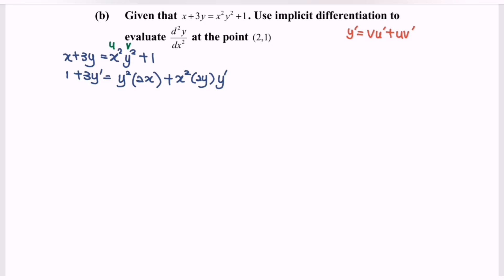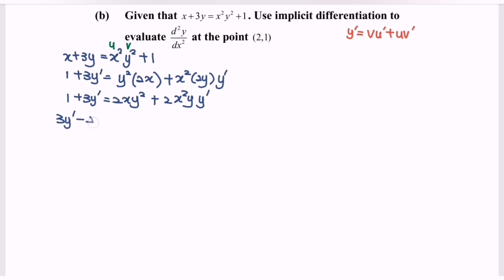Kindly rearrange the situation. We have 1 plus 3y prime equals 2xy² plus 2x²y·y prime. Rearranging: 3y prime minus 2x²y·y prime equals 2x multiplied with y² minus 1.